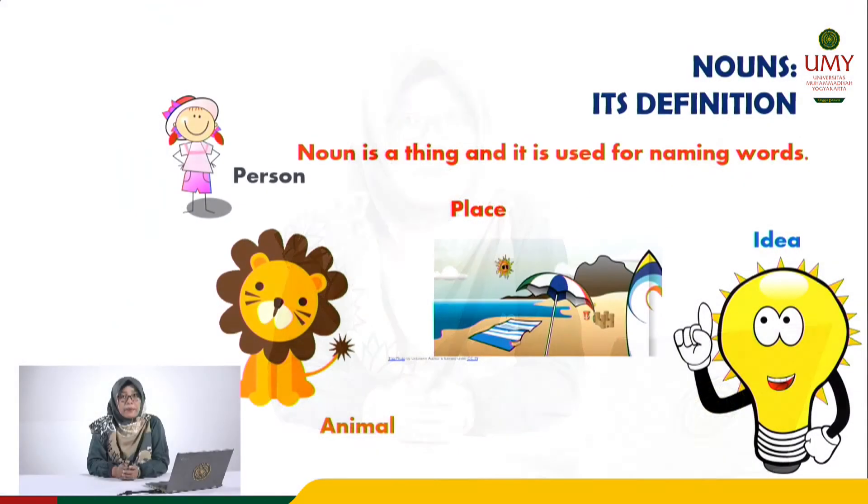The simple definition of a noun is a thing, and it is used for naming words. In this context, nouns become the basic building blocks of sentences. These things can represent a person, animal, place, idea, and also emotions — almost anything that you can think of.